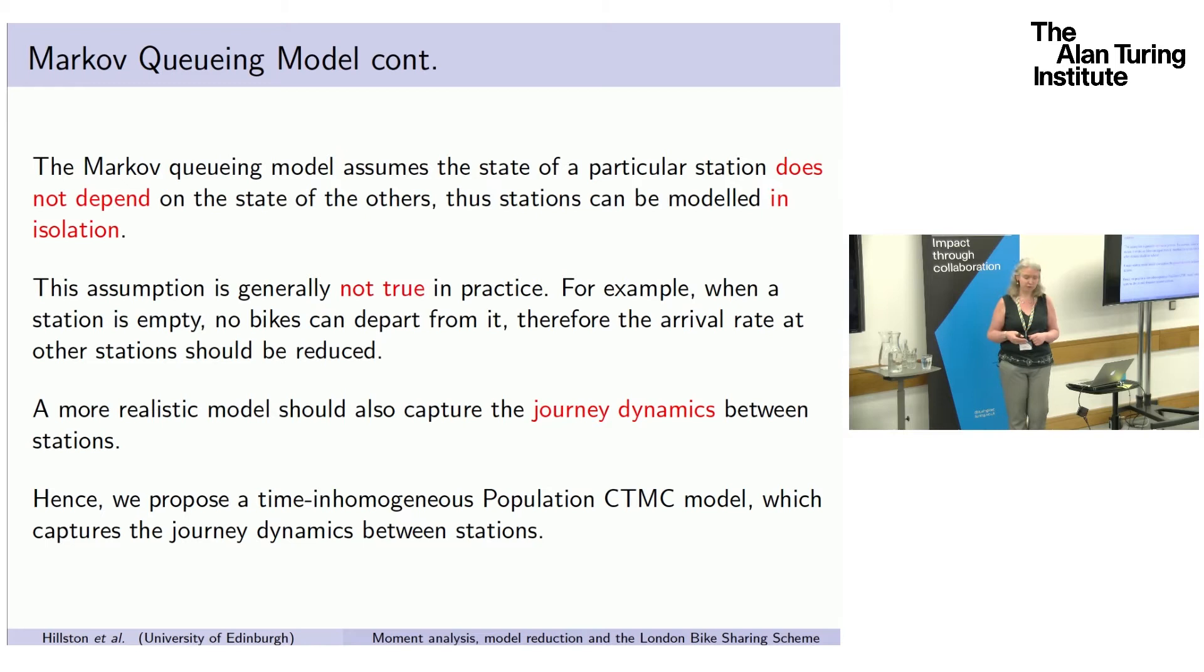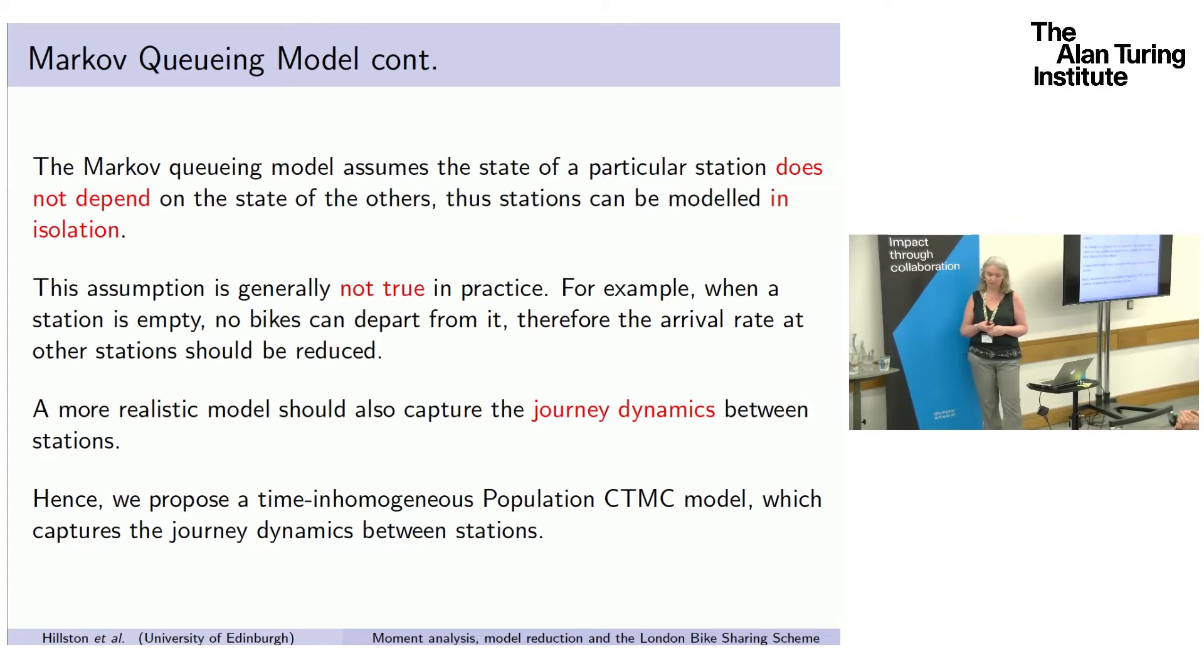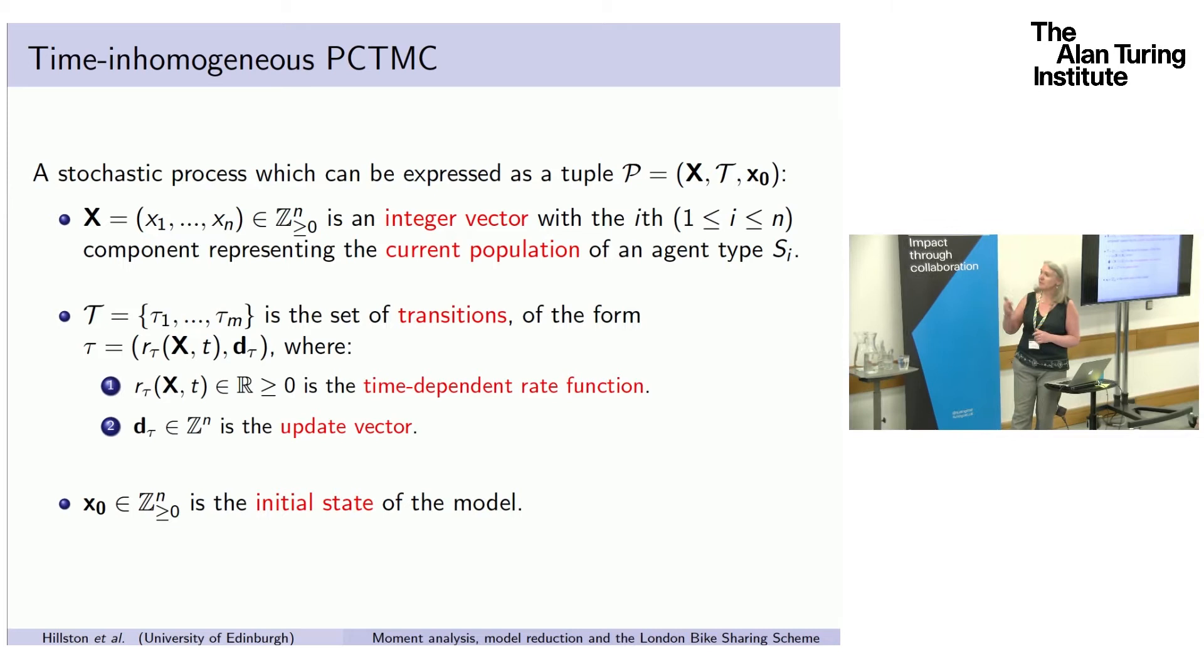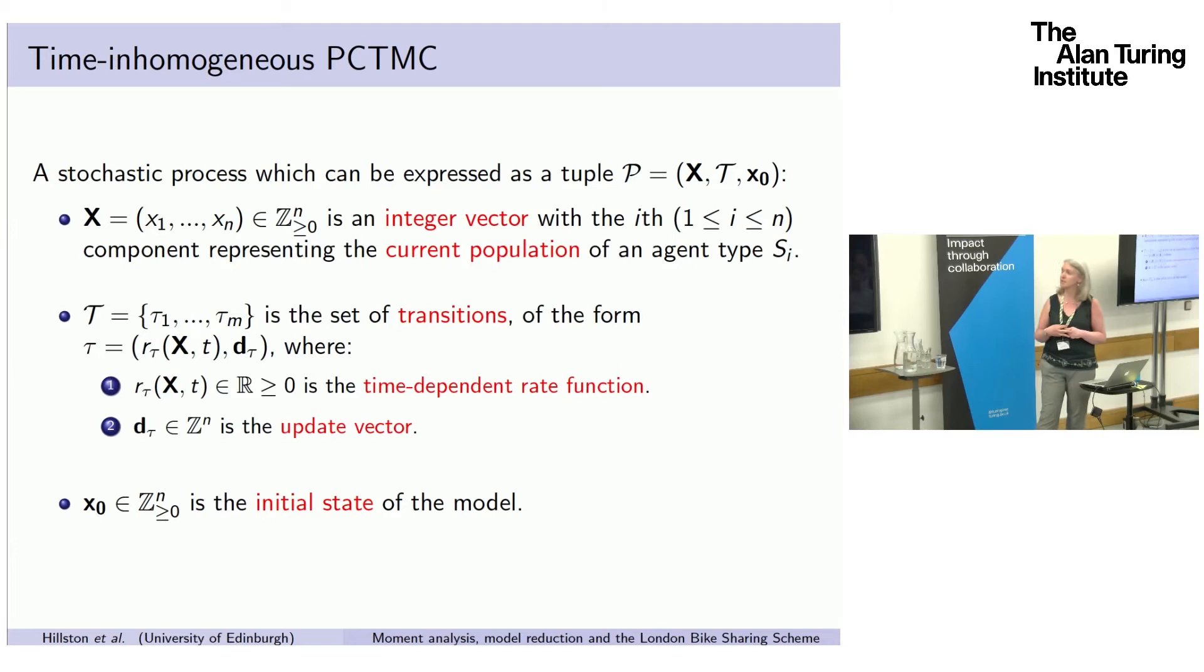We wanted to look at something more realistic in terms of journey dynamics. So we aimed to build not just birth-death processes, but something that looked at the system as a whole. We did that in terms of a time-inhomogeneous population CTMC. Population CTMC is just something where the state representation is a vector count. In our case, the vector is counting the current number of bikes at each station. And then we have transitions. Transitions are represented as a rate function which may depend on the current state and current time, and also an update of what the effect of a transition will be. If you take a bike, perhaps from King's Cross, there'll be one less bike there, one more bike on route to somewhere else.